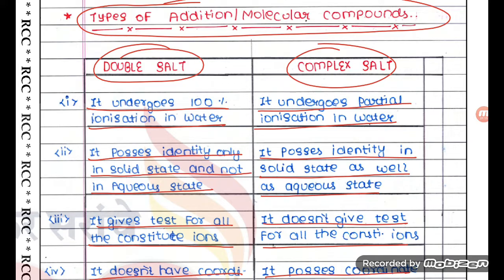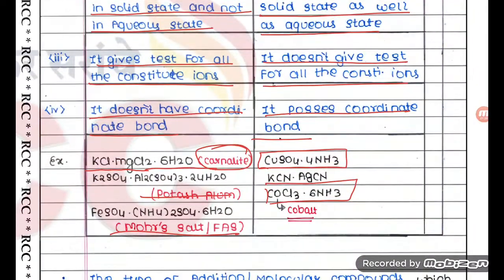To summarize: double salt is 100% ionizable, whereas complex salt is only partially ionizable, not 100%. Double salt loses its identity in aqueous medium, while complex salt retains its identity. Double salt gives a test for all its constituent ions, but complex salt does not. Double salt does not have a coordinate bond, but complex salt has a coordinate bond.